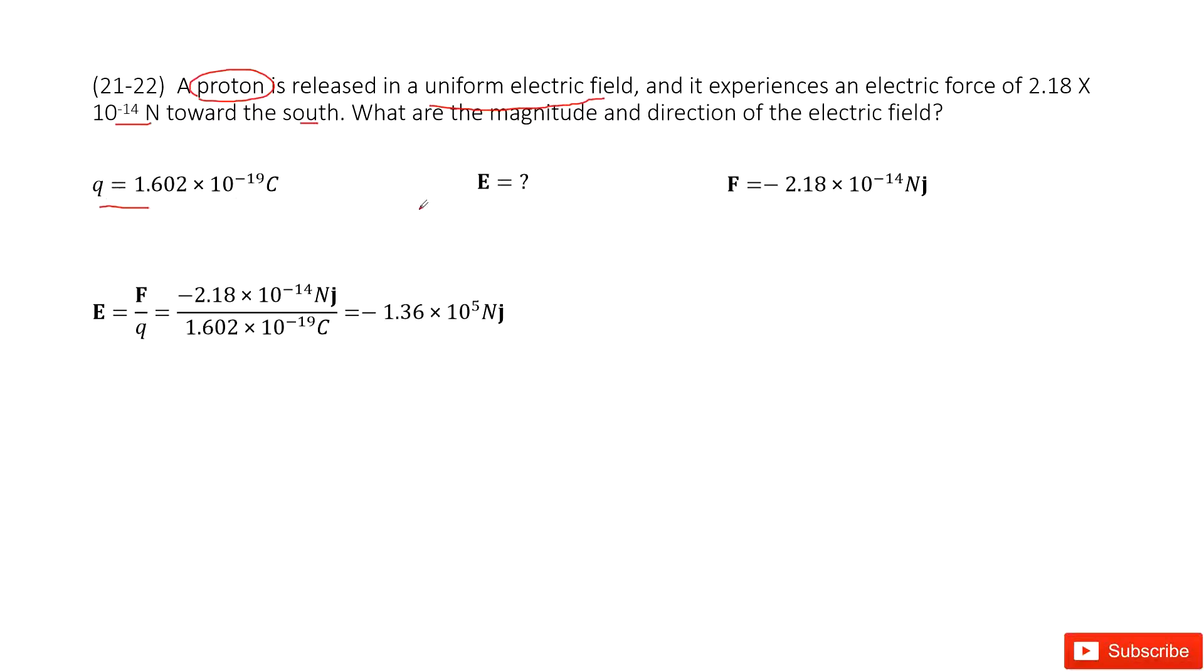The electric field is what we need to find - it's unknown. The force is given and tells us it's toward the south. Toward south means the negative y direction. So we write it as negative y direction.